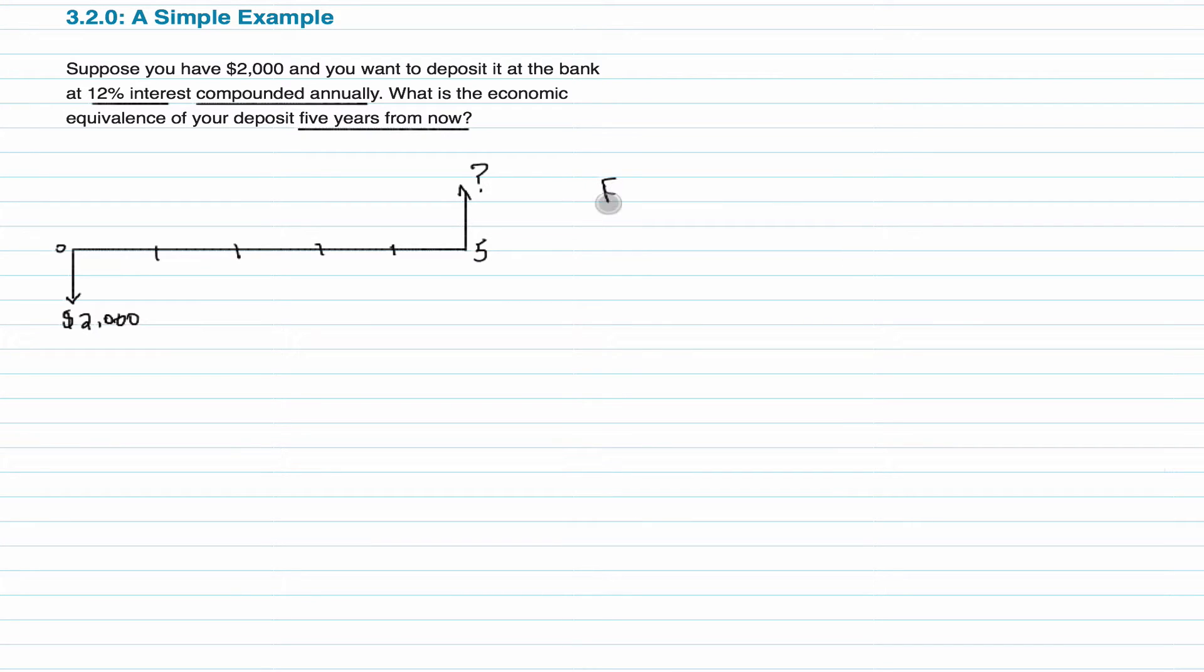Well, we can just use our compounded interest formula, which is future value. We're trying to find out the future value at 5. We don't need to write the year 5. Is equal to present value times 1 plus i to the power of number of periods.